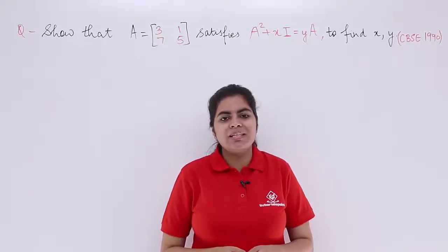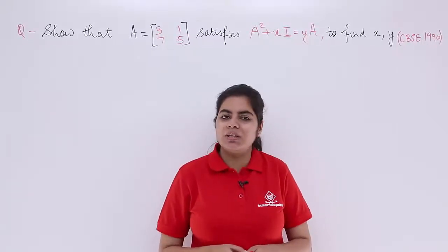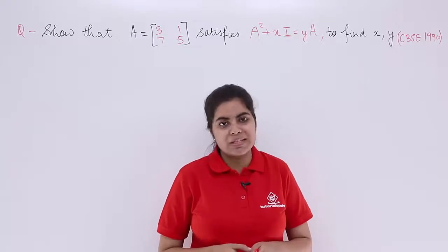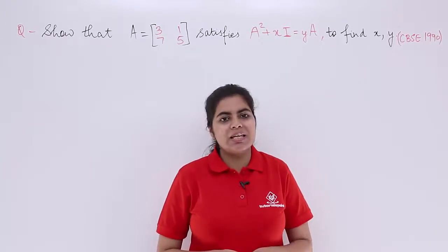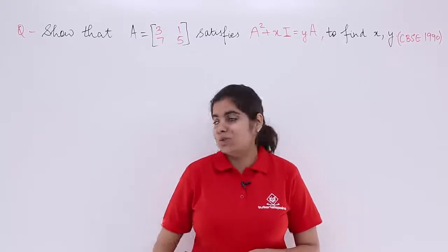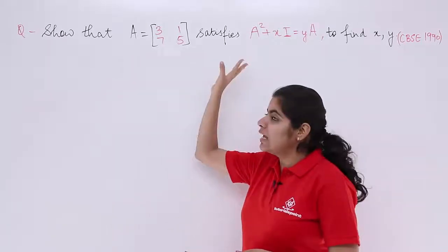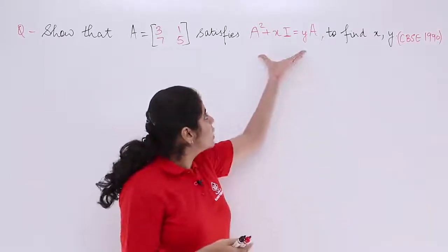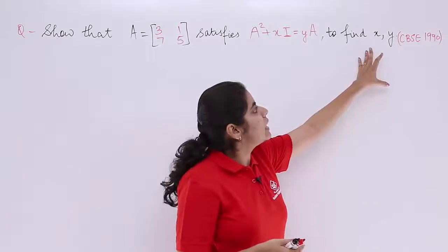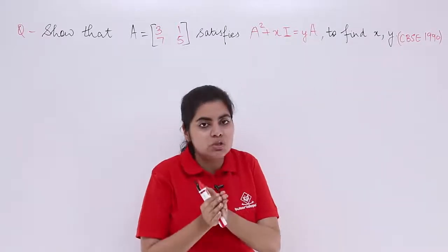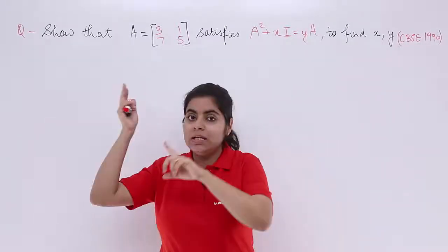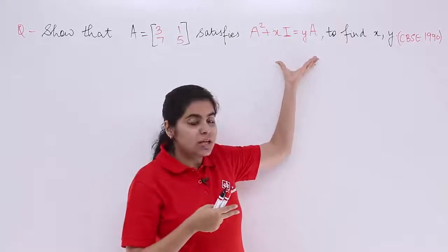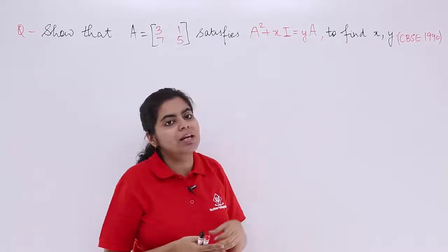In this video, we are going to see another question based on the concept of inverse of a matrix. Let's see what the question has to say and we'll be getting started with the solution. It says, show that A satisfies this equation to find out x and y. That means it is given to me that A is being satisfying by this equation and I have to just find out the two variables x and y.